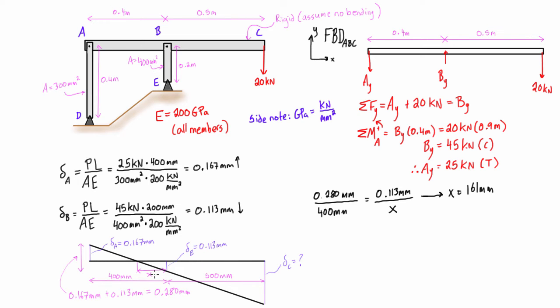And if we subtract 161 from 400 millimeters, we just get 239 millimeters. And on this side, if we just add 500 millimeters plus 161 millimeters, we get 661 millimeters.